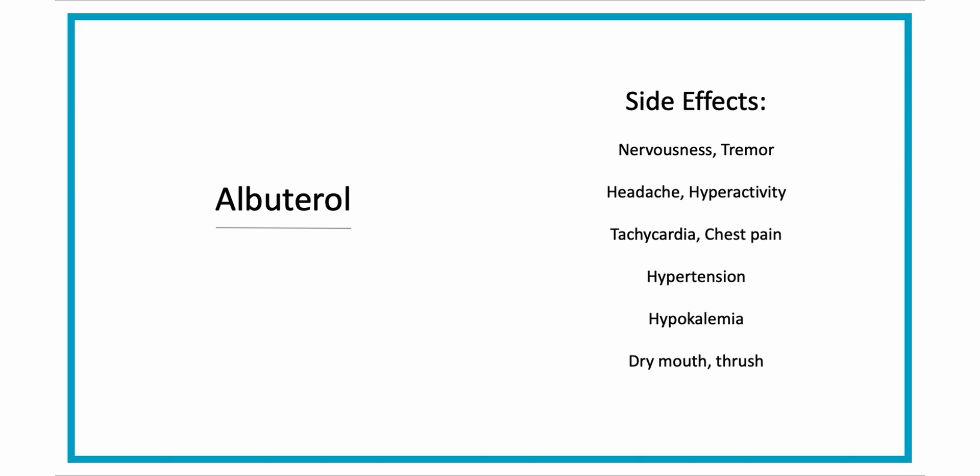Some side effects to watch out for: albuterol can cause nervousness, tremor, headache, and hyperactivity, because even though it mainly binds to beta-2 receptor sites, it also has some effect on the beta-1 receptor sites, which are responsible for the fight-or-flight response. You might also see chest pain, arrhythmias, palpitations, tachycardia, and hypertension, again because it's also activating beta-1 — that fight-or-flight response — which increases heart rate and blood pressure.